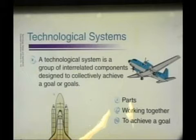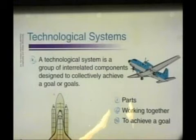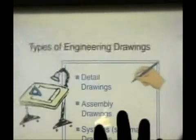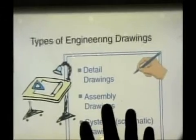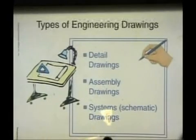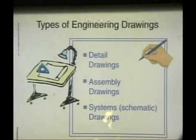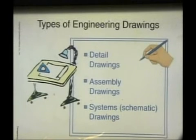As we have seen in this simple example, the language of engineers is engineering graphics — we use that to communicate. We will look at other types of engineering drawings: we have detailed drawings, assembly drawings, and system or schematic drawings, which are line diagrams. We will use the concept of all of these to put them together to complete the whole unit.